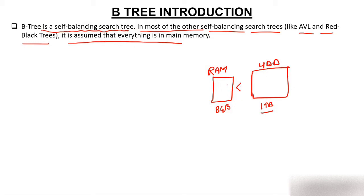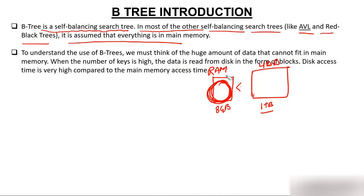All processing takes place in RAM. For trees like AVL and Red-Black trees, we assume everything is in main memory. But for B-tree, we must think of a huge amount of data that cannot fit in main memory. So B-tree data cannot fit in main memory.